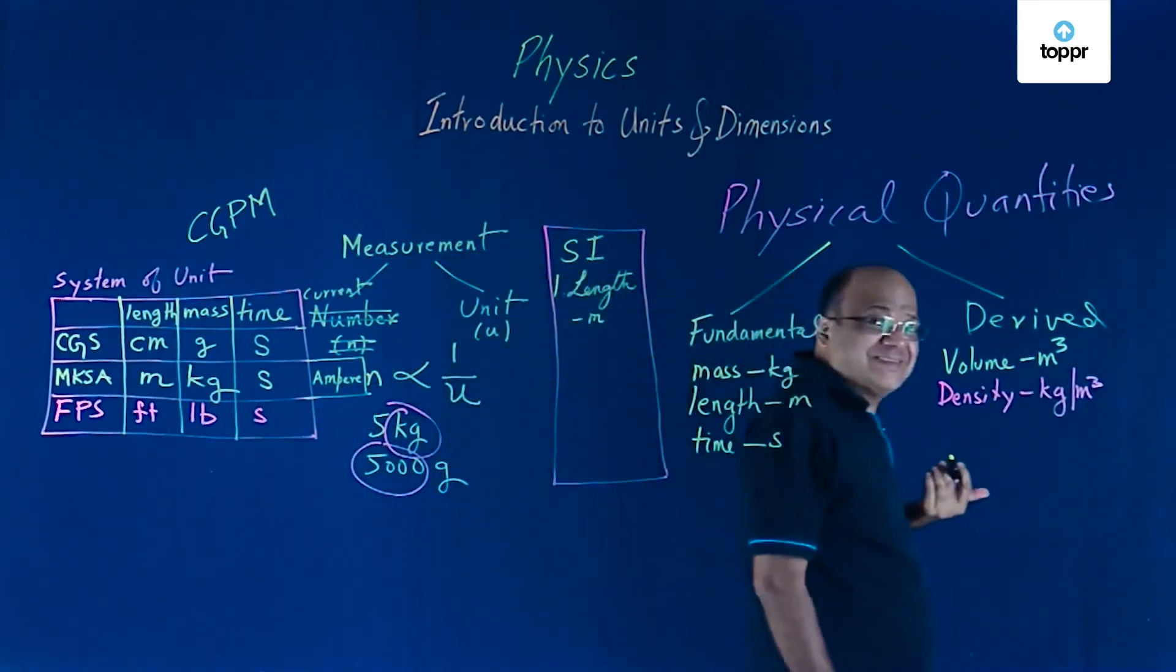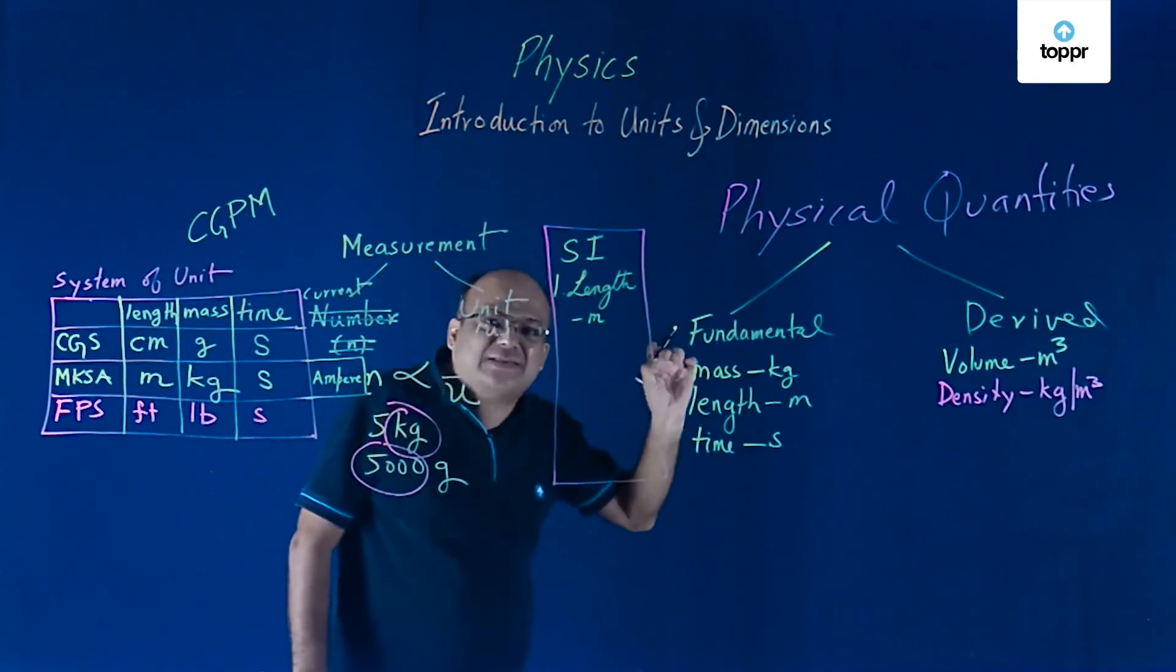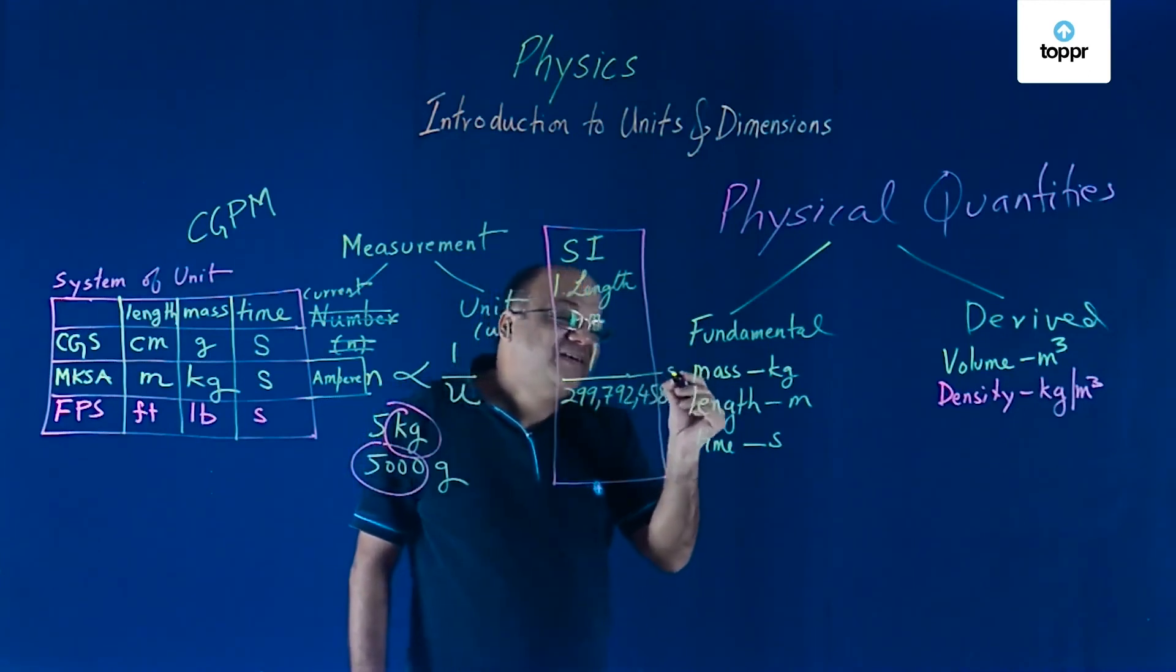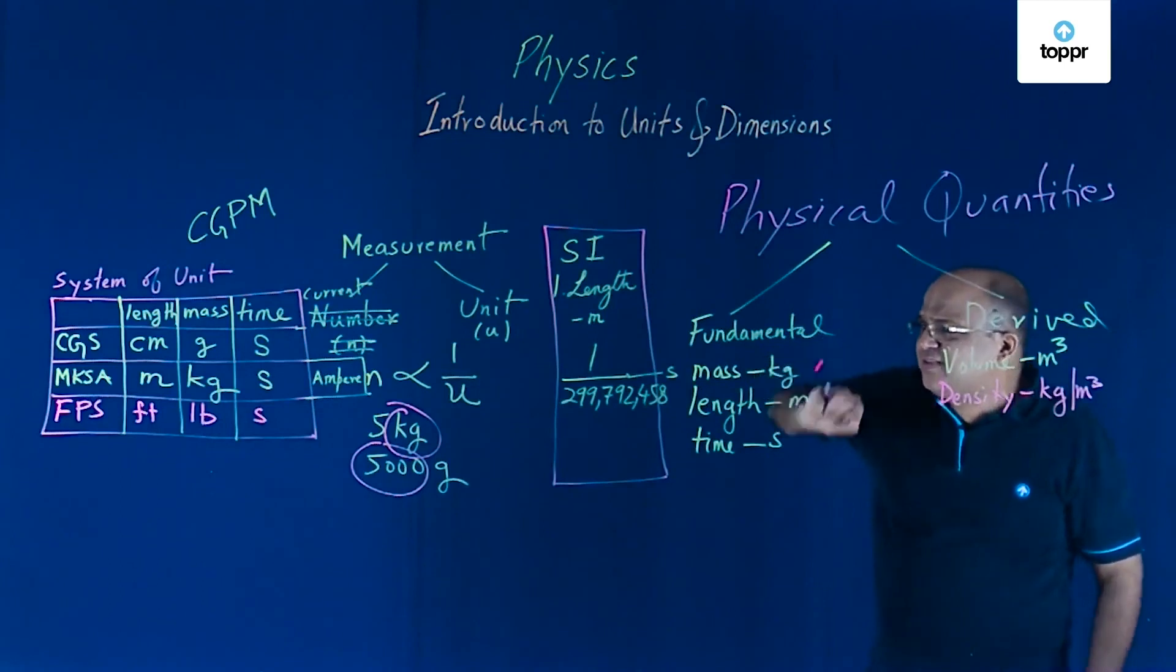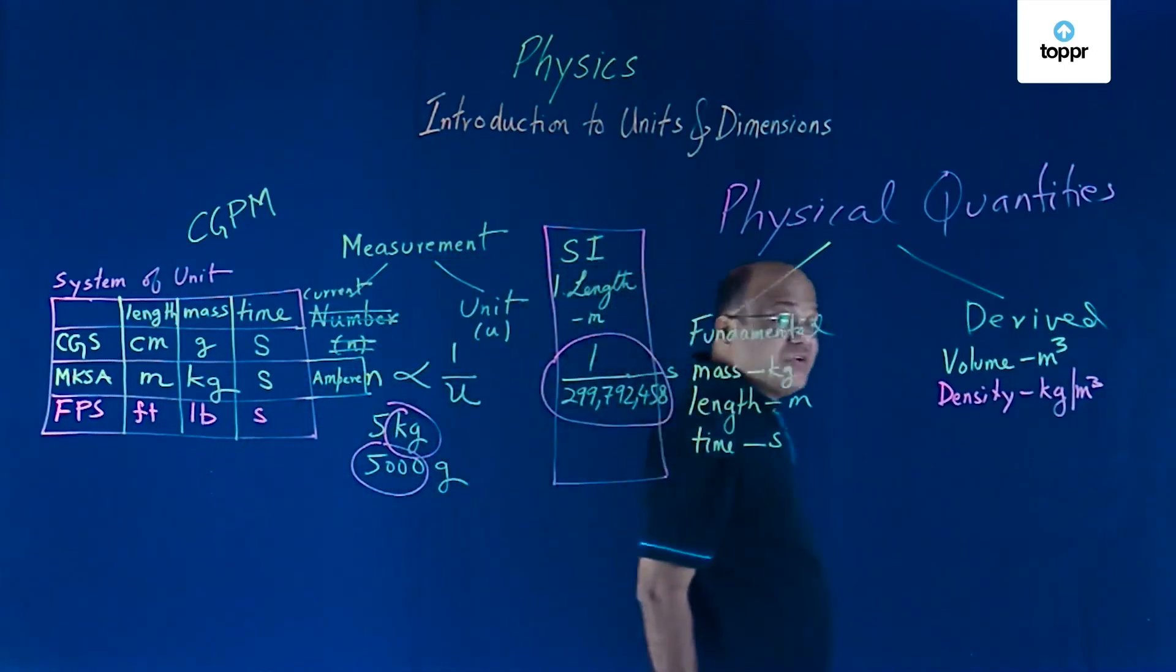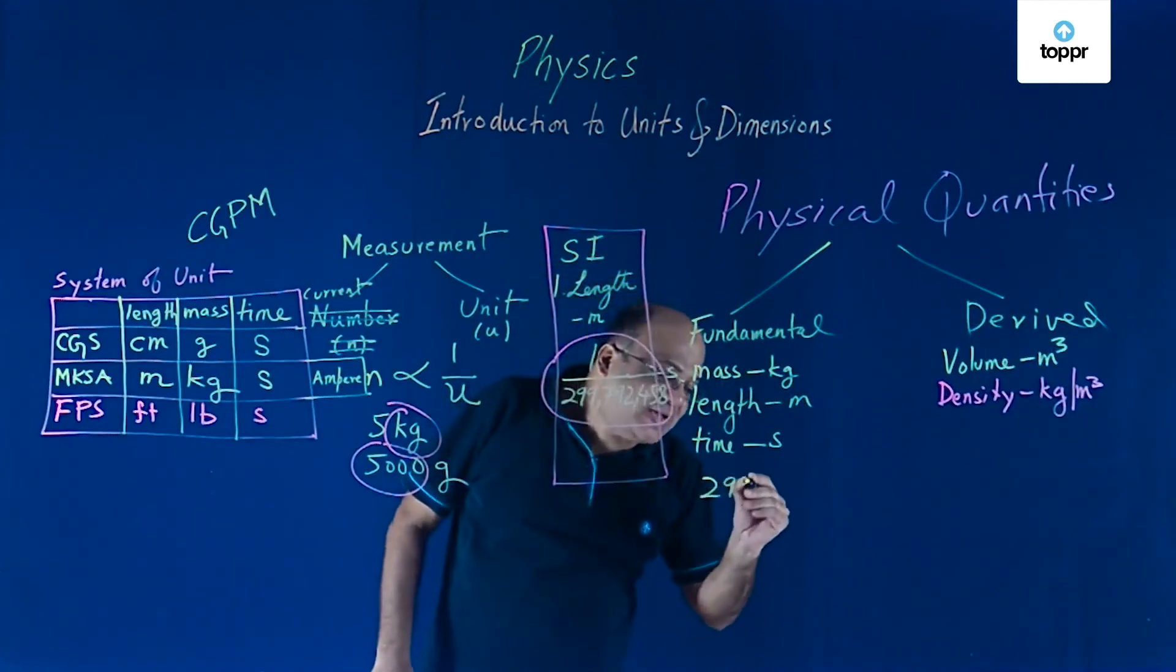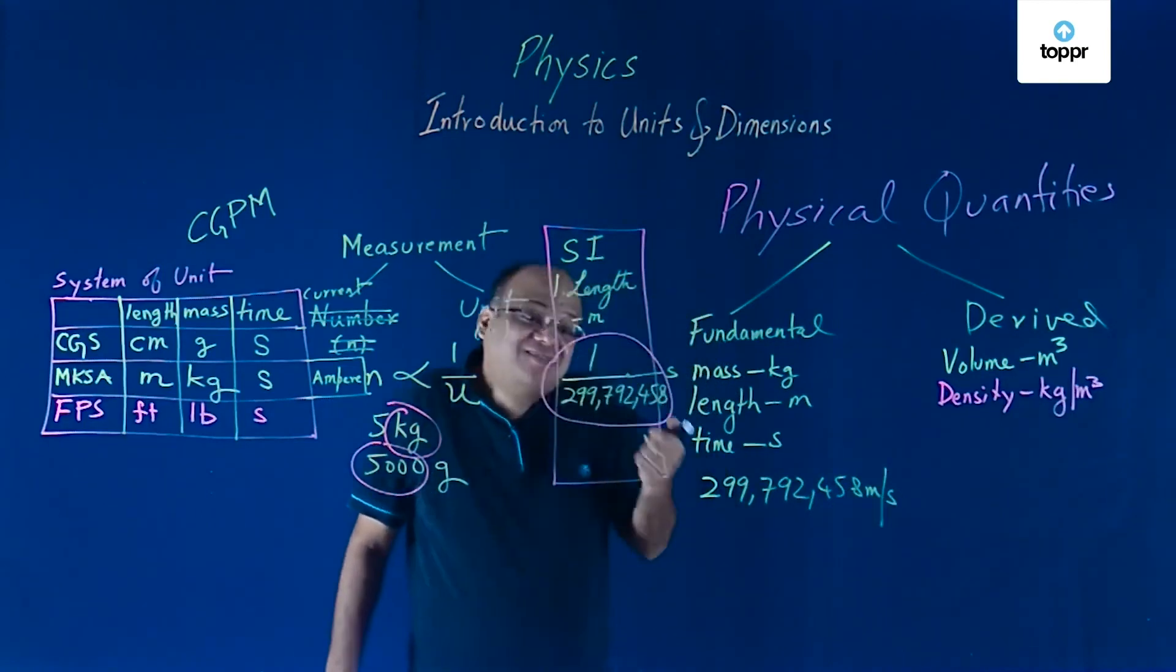What is meter? One meter is the distance traveled by light in vacuum in 1 divided by 299,792,458 seconds. Light travels very fast. Fastest. Nothing can travel faster than light in vacuum. So whatever distance light travels in these many seconds, 1 by 299,792,458 seconds, that is known as 1 meter. Therefore, the speed of light in vacuum is exactly 299,792,458 meter per second. Why is this exact quantity? Because second is defined based on this.